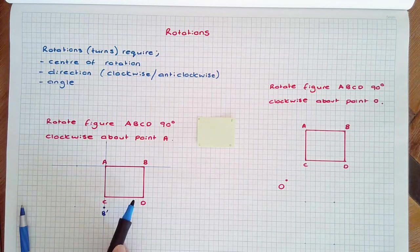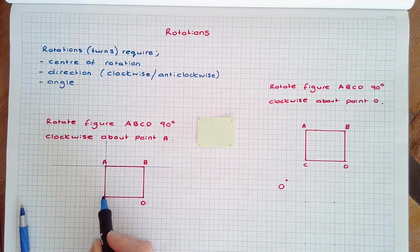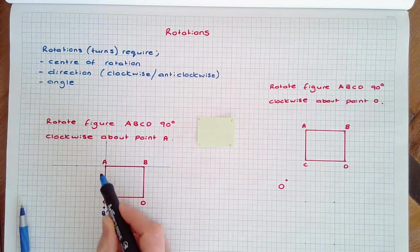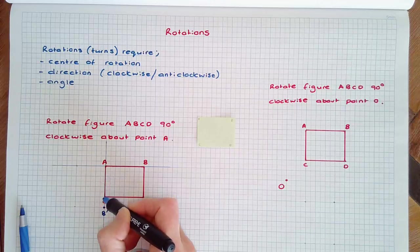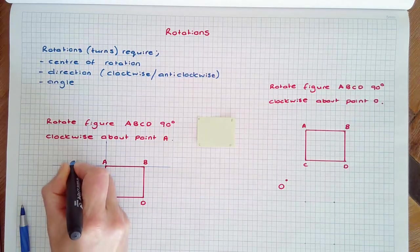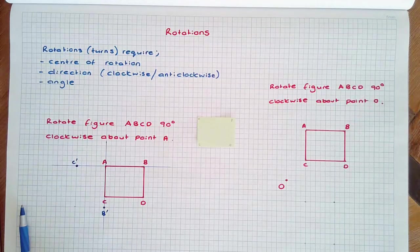Now let's do C next and come back to D. C, rotating at 90 degrees clockwise, will be up on this line. It needs to be the same distance from A, 1, 2, 3. 1, 2, 3. So I can see C' is going to be located in this point.